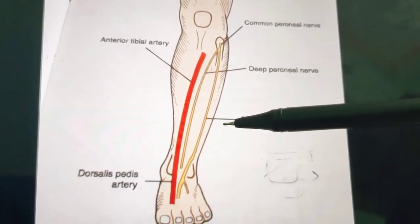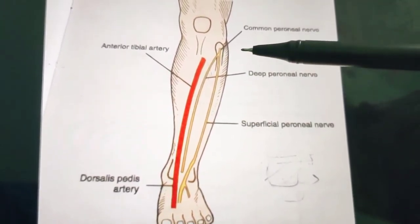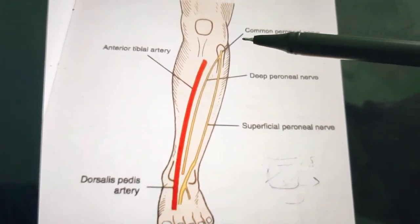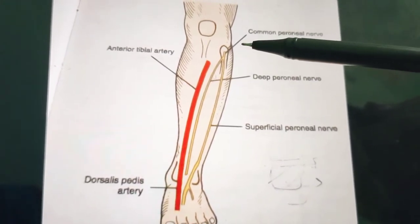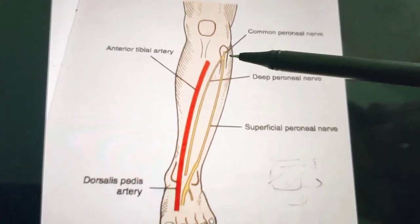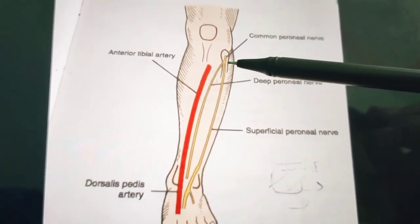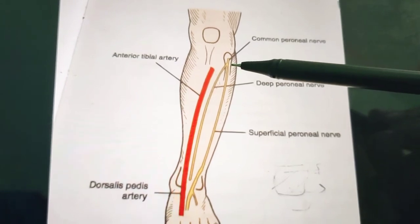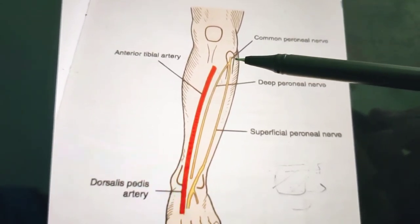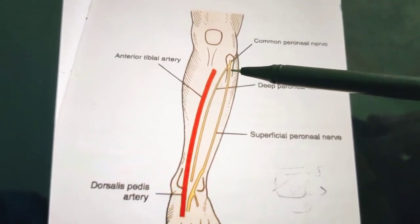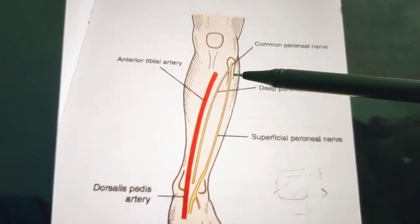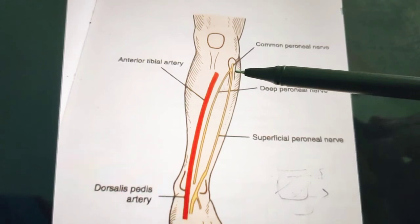The superficial peroneal nerve begins on the lateral side of the neck of fibula, especially under the cover of the upper fibers of peroneus longus. The origin of peroneus longus is from the head of the fibula and also on the lateral side of the shaft of fibula, so here are the upper fibers of peroneus longus, and along with that muscle the nerve starts its journey.